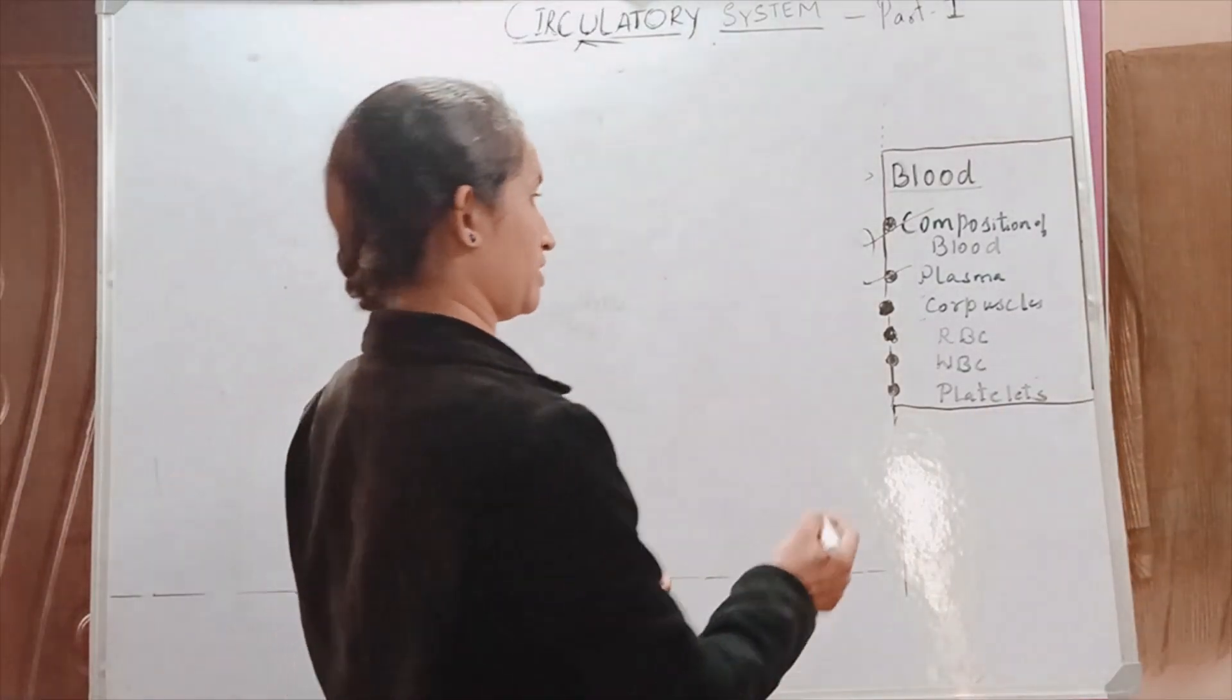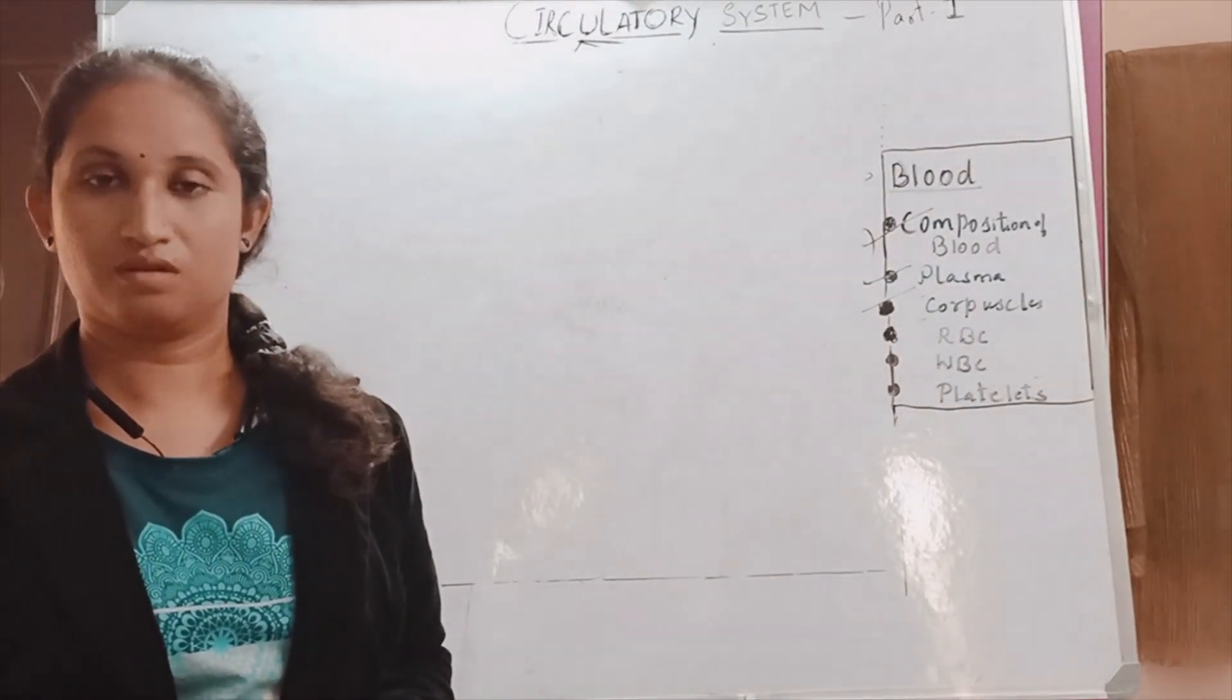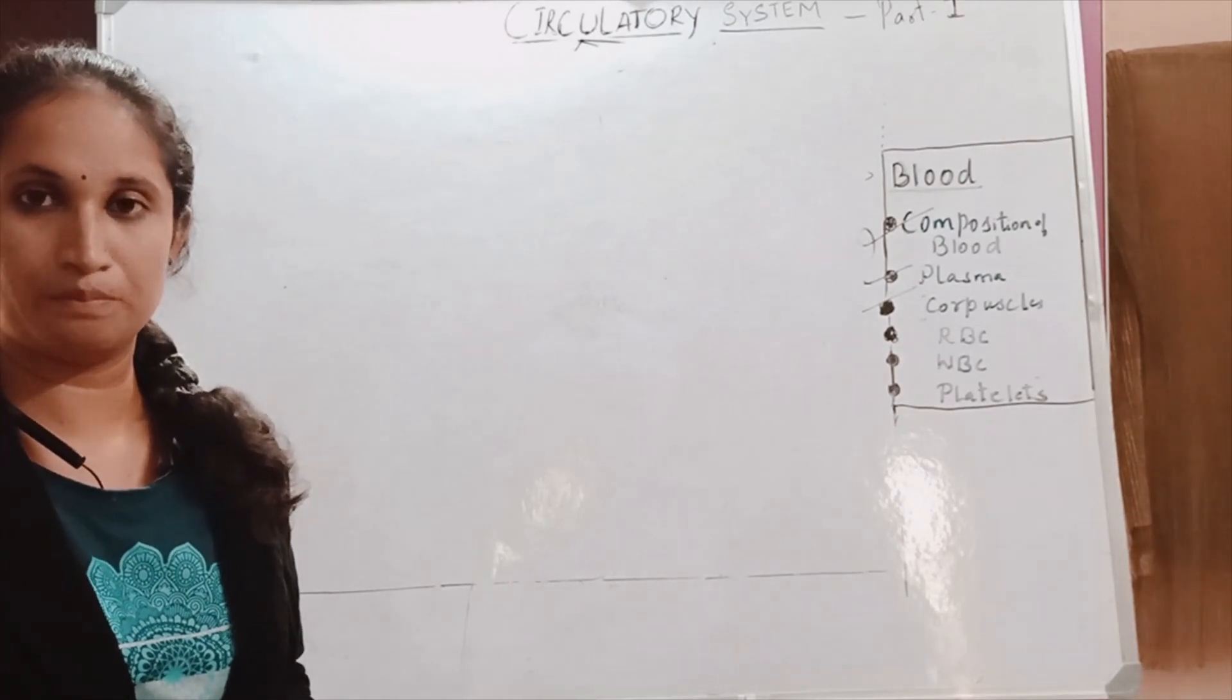Now we will discuss about the next topic, that is corpuscles. Blood contains plasma. Already we have discussed. Next we will discuss about the blood corpuscles present in the blood.